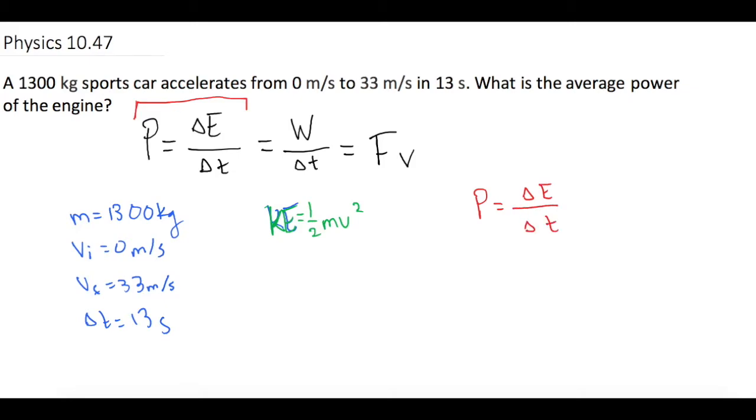So now I'm going to plug in our initial and our final kinetic energy formulas. So power now is equal to delta, and anything I always remember is final minus initial, so our final kinetic energy minus our initial kinetic energy over the change of time.